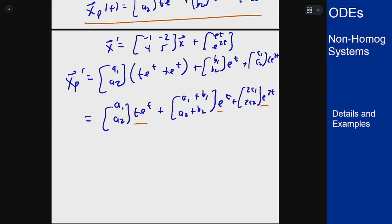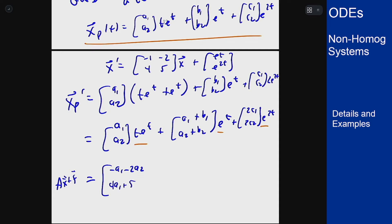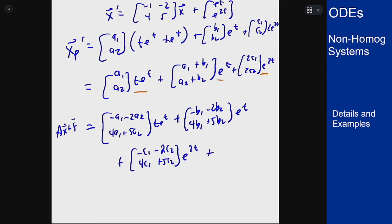I'm matching up with these functions because when I plug my solution into the right-hand side I'll get the same types of functions. On the right-hand side, applying the matrix term by term, I get [-a1-2a2, 4a1+5a2]·t·e to the t, and the same pattern repeated for the b and c vectors times their respective exponentials. Then I tack on the forcing term [e to the t, e to the 2t].